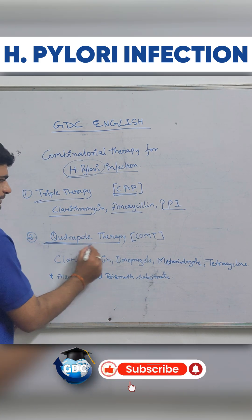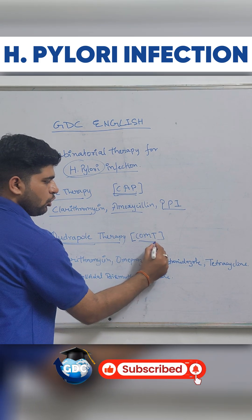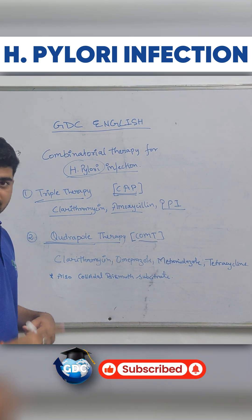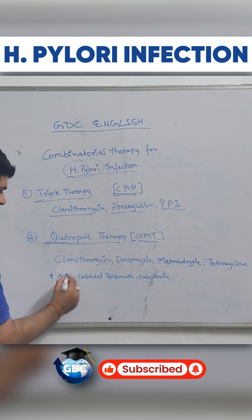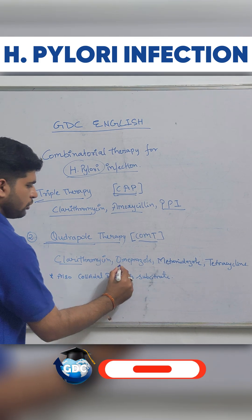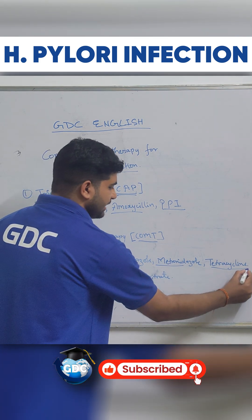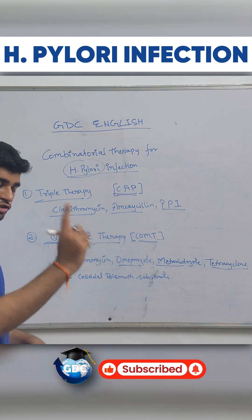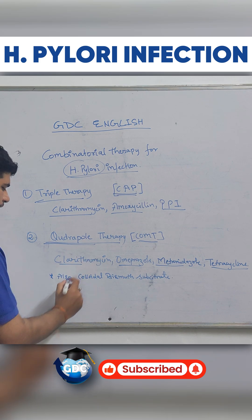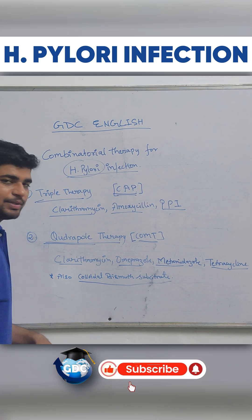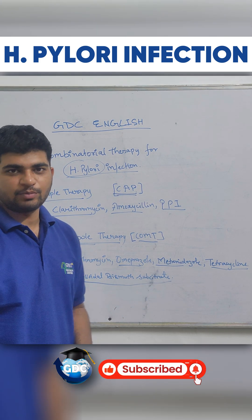For quadruple therapy, use the mnemonic COMT: Clarithromycin, Omeprazole, Metronidazole, and Tetracycline. Additionally, colloidal bismuth substrate is also given with this regimen.